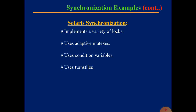Conditional variables and reader-writer locks are used when longer sections of code need access to data. The last point is it uses turnstiles to order the list of threads waiting to acquire either an adaptive mutex or reader-writer lock. That is about Solaris synchronization.